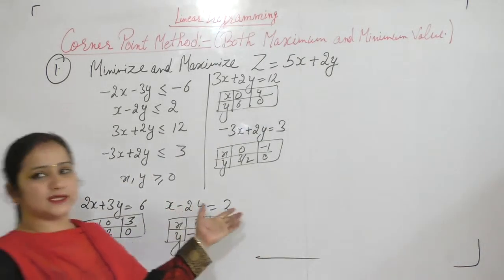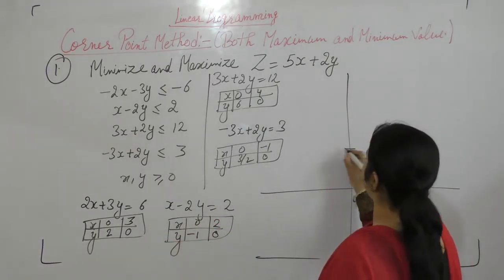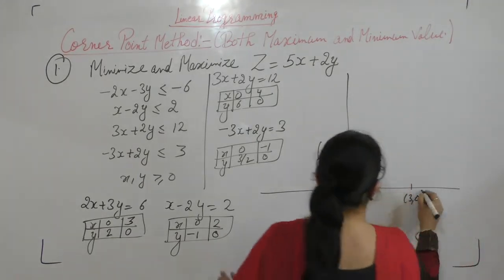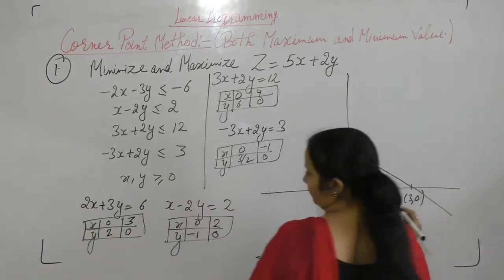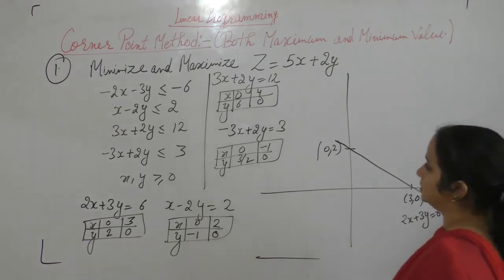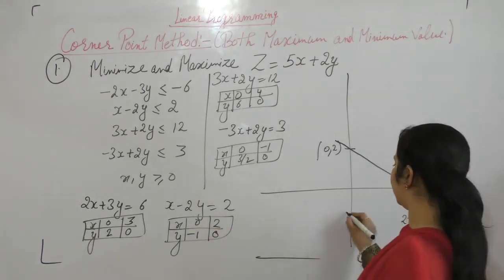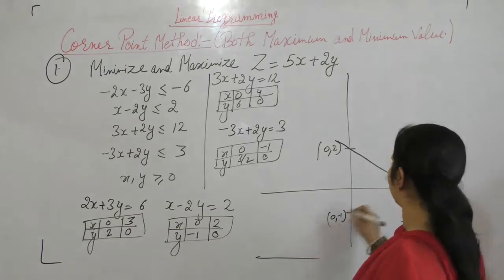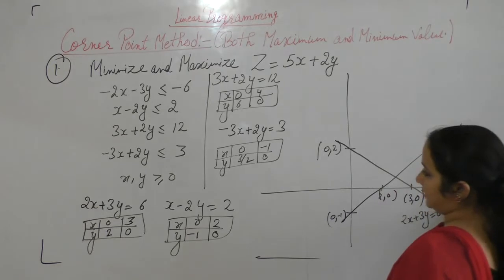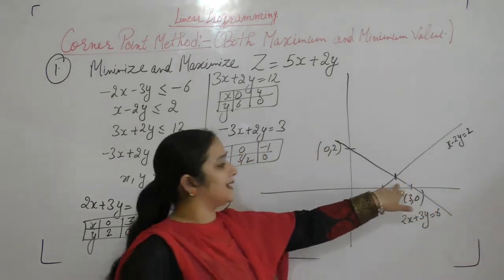Now we draw the graph for these equations. For 2x plus 3y equals 6, the points are (0, 2) and (3, 0). For x minus 2y equals 2, the points are (0, -1) and (2, 0). This is the graph for those two lines, and they are intersecting at a point.